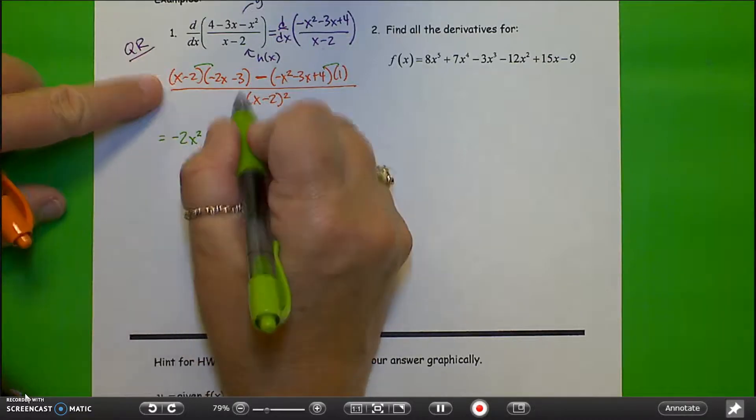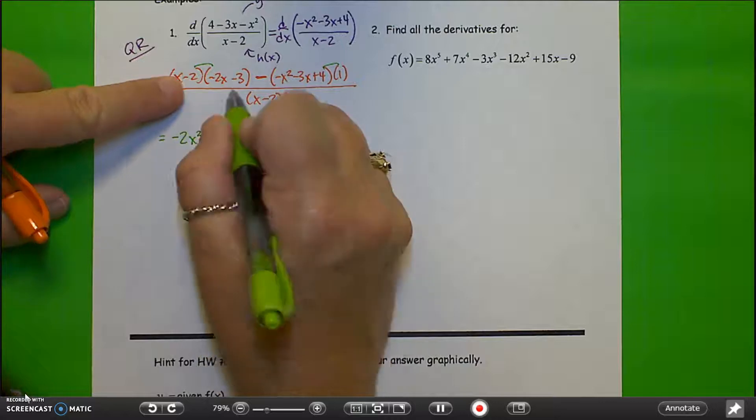Inside terms, plus 4x. Outside terms, minus 3x. Last terms, plus 6.